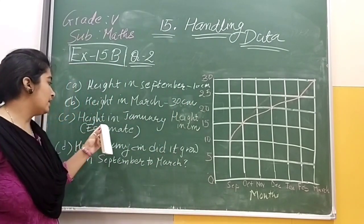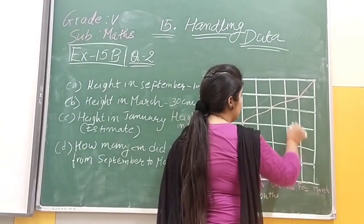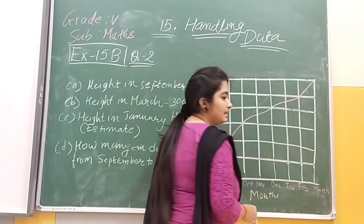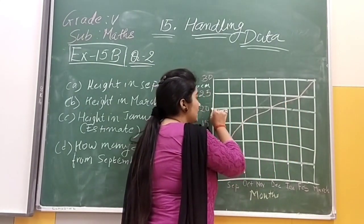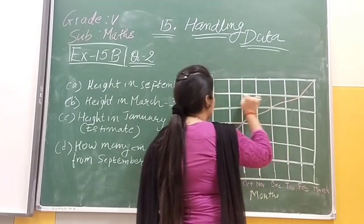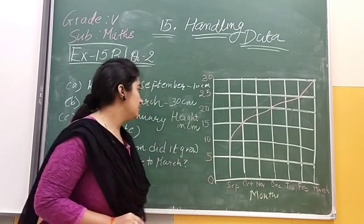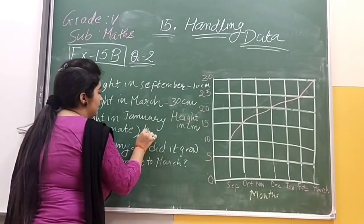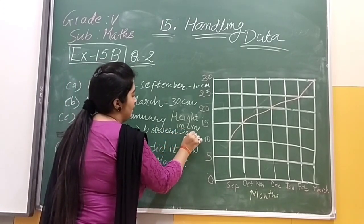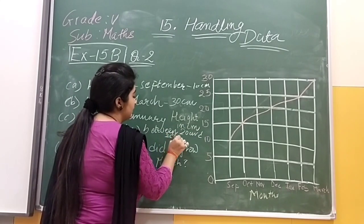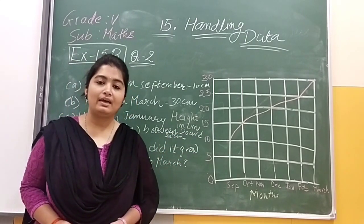Then we have the height in January — estimate. Estimate kyun bola hai? Kyunki yahan pe January mein we can see that it is neither on this line nor on that line — it is in the middle. So here we have 20, and here we can see 25. So the height will be between 20 and 25 centimeter. Our answer will be between 20 and 25 centimeter.